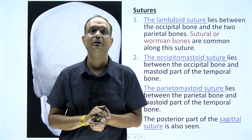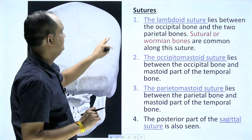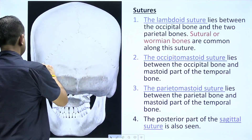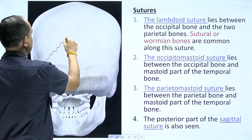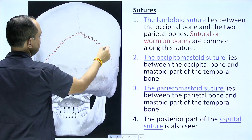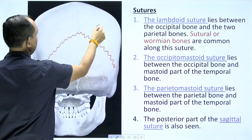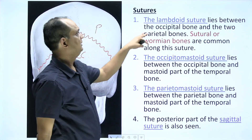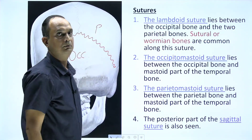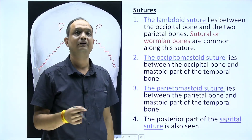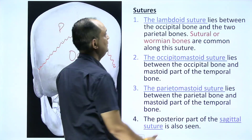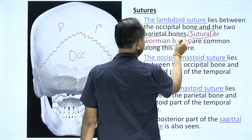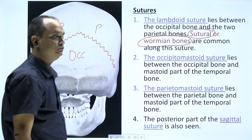The joints of the skull bones visible in norma occipitalis are known as suture joints. You will have the lambdoid suture, which is present between the parietal bones and the occipital bone — that is, this suture lies between the occipital and the two parietal bones.